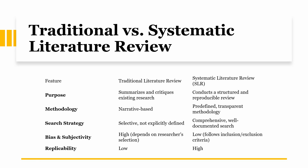Traditional versus systematic literature review: the purpose of a traditional literature review is to summarize and critique existing research, while a systematic literature review conducts a structured and reproducible review. Traditional reviews use a narrative-based methodology; SLR uses a predefined, transparent methodology. The search strategy in traditional reviews is selective — choosing studies that support your argument — while SLR uses a more comprehensive, well-documented search. Bias is high in traditional reviews but very low in SLR. Replicability is very low in traditional reviews but very high in systematic literature reviews.